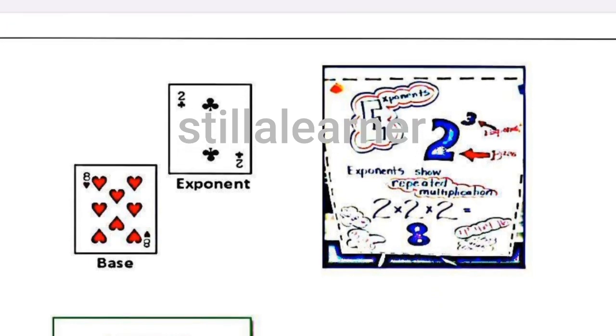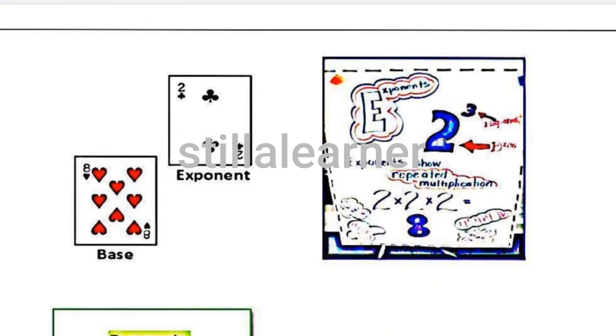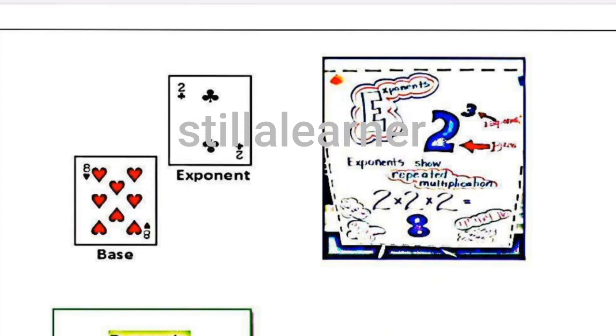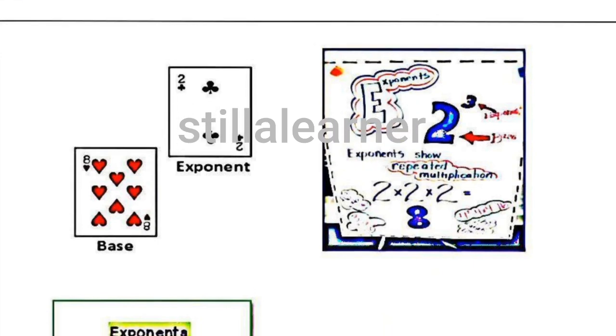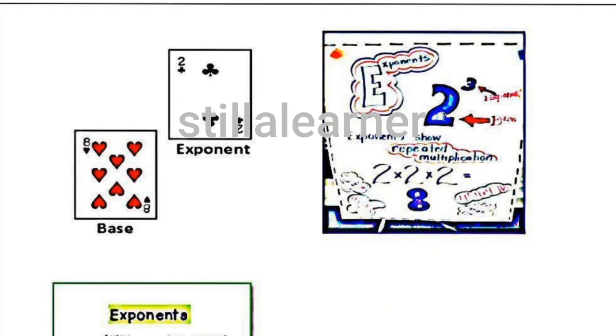Just see here, this is also one very good example for you. Here base is 8 and exponent is 2, means 8 to the power 2. Then what should be the answer? 8 into 8, that's 64 will be the answer.